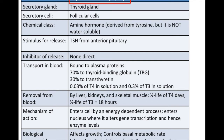It's an amine hormone but it's not water soluble, so it's carried around the body in the blood by thyroid binding globulin and by transthyretin. It is stimulated to be released from the thyroid by thyroid stimulating hormone, which is released from the anterior pituitary.